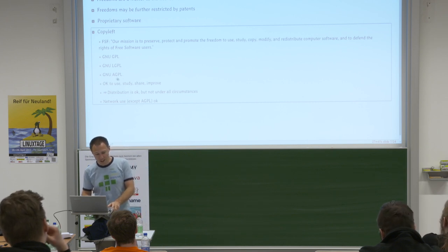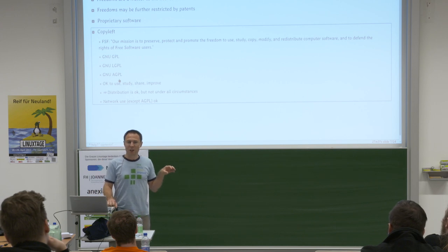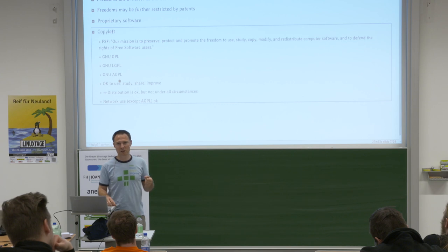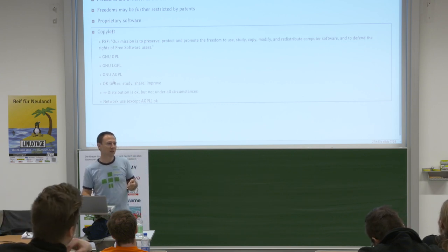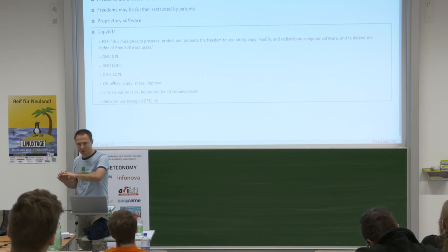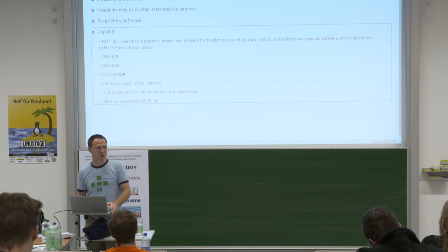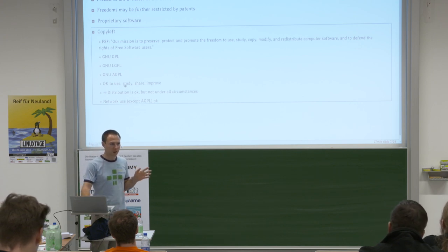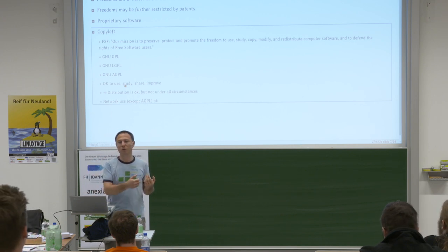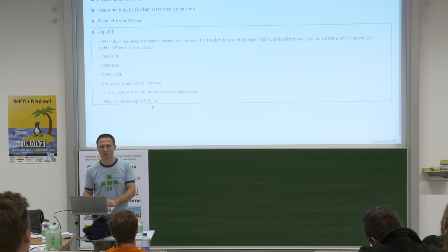The AGPL closes that loophole and says: if you use software on a server, then usage over the network is to be considered distribution, meaning you must distribute your code under the same license. So the AGPL is essentially the only license that's business-dangerous if server-hosted. In general, it's okay to use, study, share and improve the software — you don't have to be afraid as a company. The danger only starts when you link against a product, incorporate it into your product, and then ship it. Distribution is okay but not under all circumstances, and network use is almost always okay, except for the AGPL.